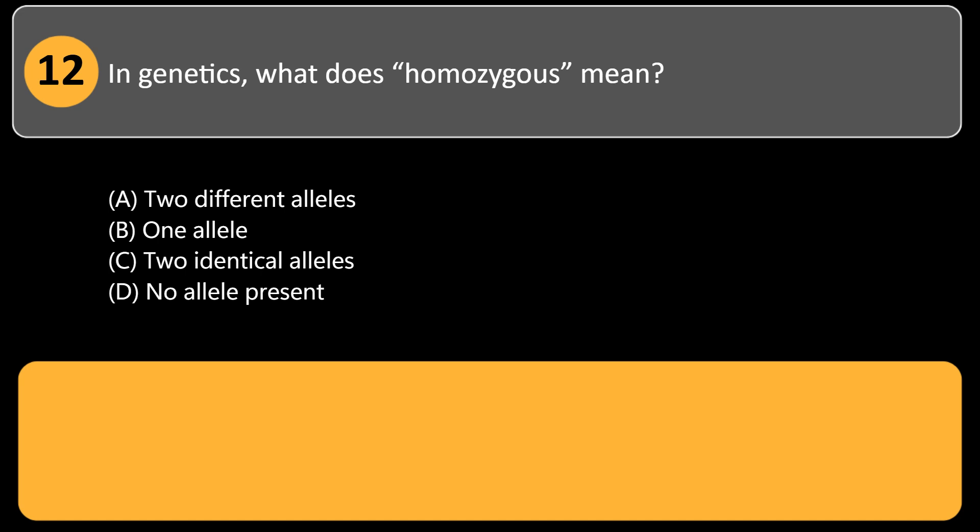In genetics, what does homozygous mean? A. Two different alleles, B. One allele, C. Two identical alleles, D. No allele present. Answer: C. Homozygous means both alleles at a gene locus are the same.